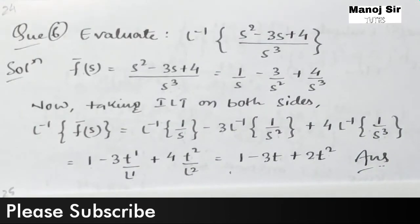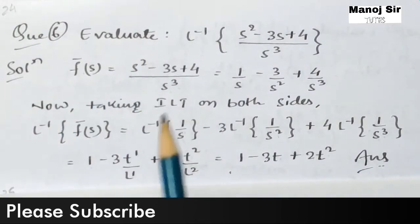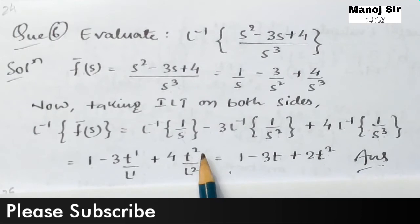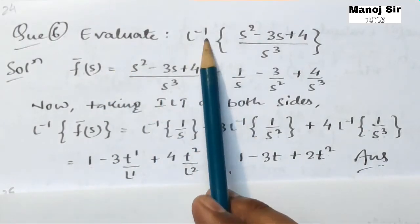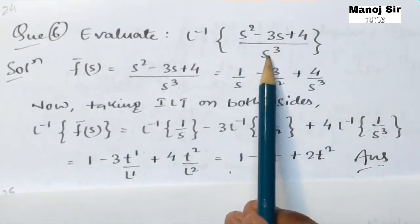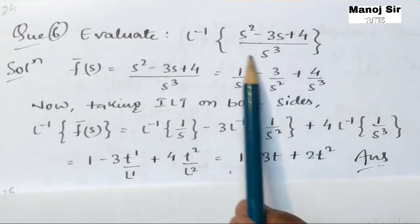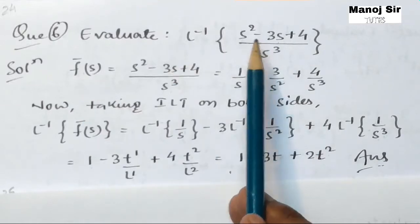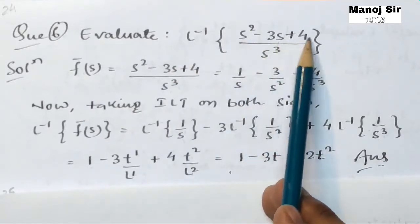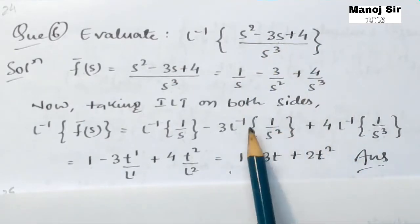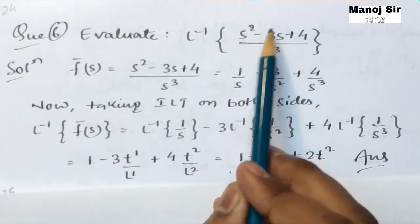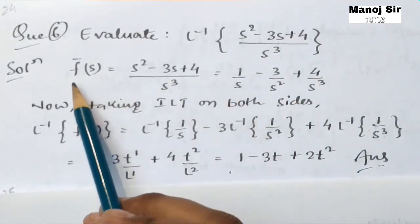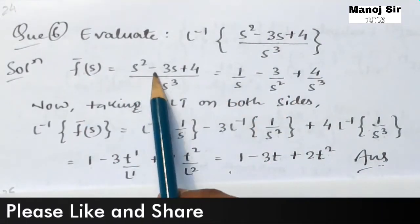Welcome to video number 24. In this video we are going to solve the sixth problem on the topic inverse Laplace transform. The question is: evaluate the inverse Laplace transform of (s² - 3s + 4) / s³. This is basically f̄(s) = (s² - 3s + 4) / s³, and we need to find the inverse Laplace transform of this f̄(s).